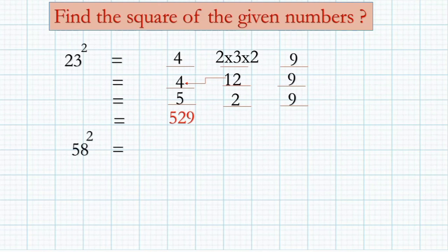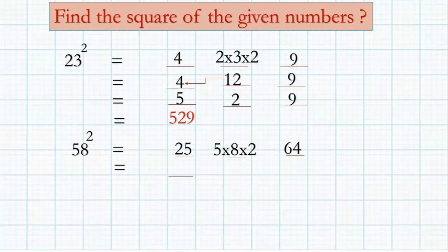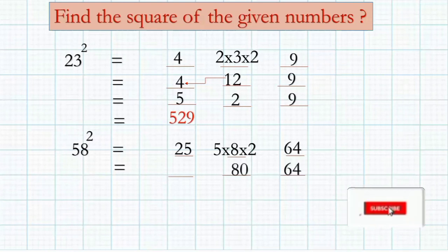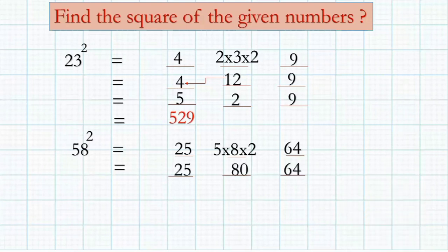Next question: 58 squared. Same method — eight squared you have to write in the last, five squared in the first. In the middle, multiply every number in the question: five into eight into two. Then 64 in the last, and five twos are ten, ten eights are 80, first is 25.